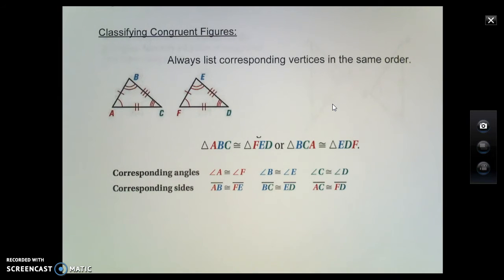This is a lot more complicated than what we've been doing in the past with congruence. So in order to show that two triangles are congruent, you have to have six congruent statements that are all going to be true.